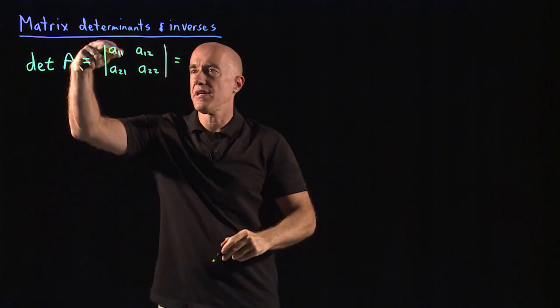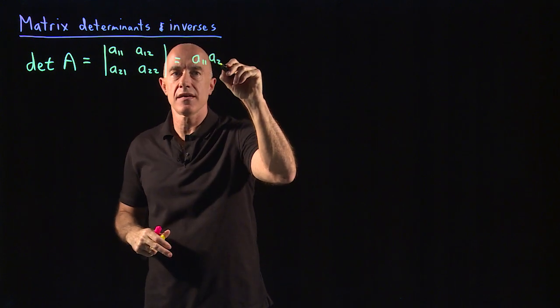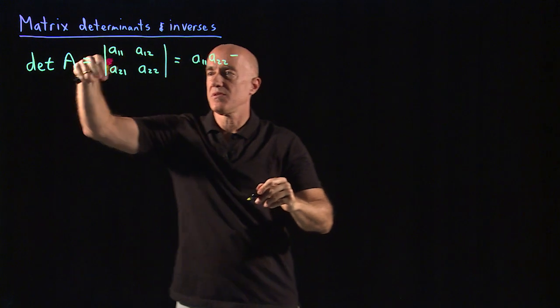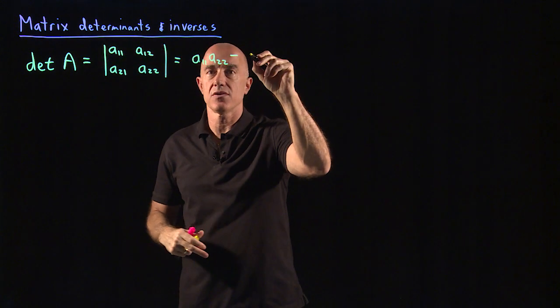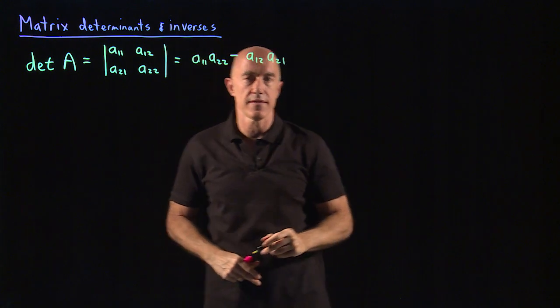You get the determinant by multiplying the diagonal, A11 times A22, and then subtract the off diagonal, so A12 times A21.